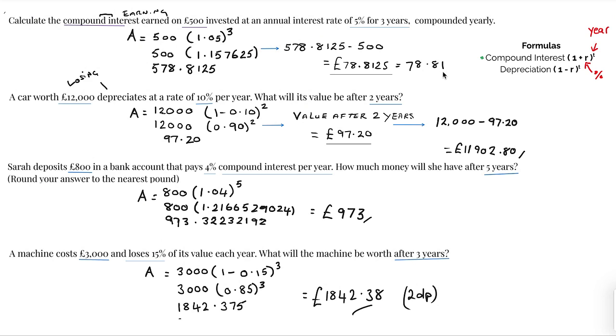This is a depreciation, exactly the same guys but it's a negative. So it's a depreciation, I've got the amount we're looking for is 12,000 and then we have one minus that percent which is 0.10 to the power of two.